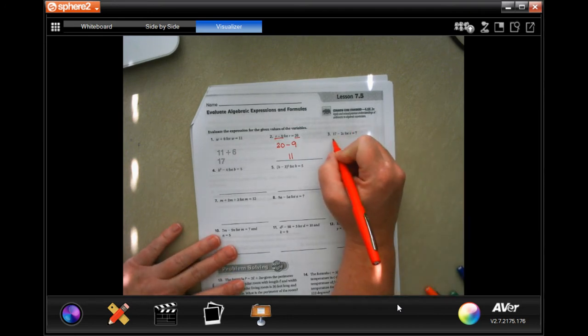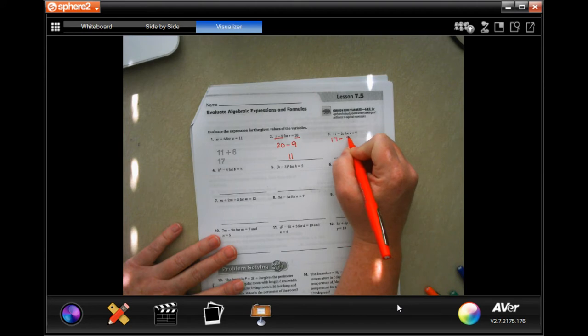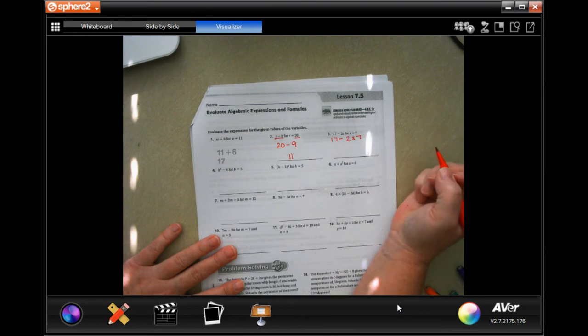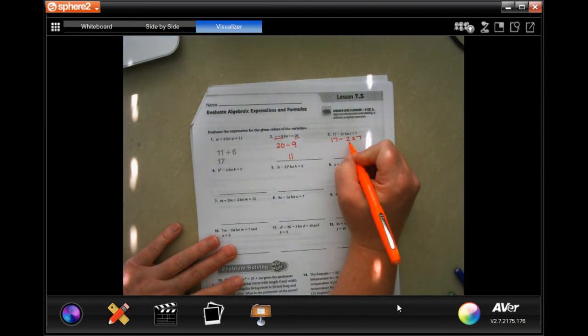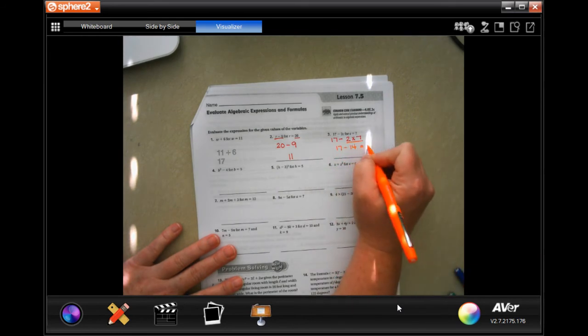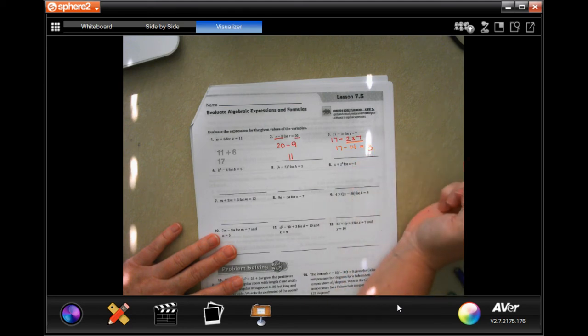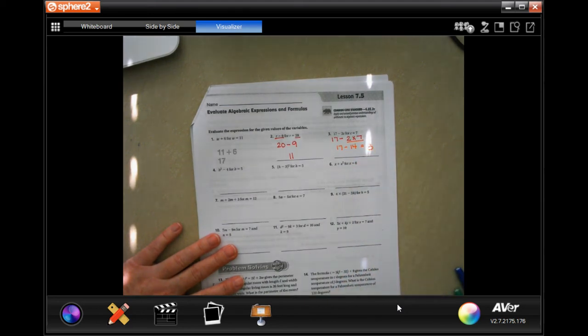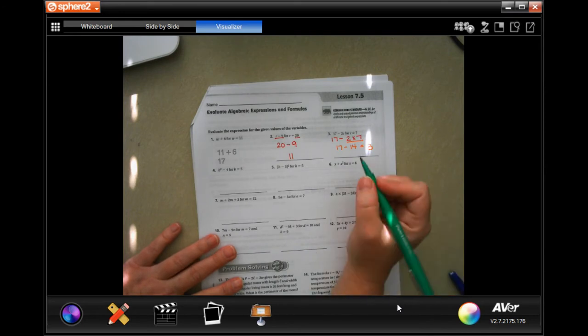So this one, the numbers aren't going to change. But we know that when there's a number next to a letter, it means multiply. So two times whatever that is, and it says that C is equal to 7. Now we have to do our multiplication first. So 17 minus 2 times 7 is 14. So that one's 3. I'm not going to make it any harder than it's got to be.